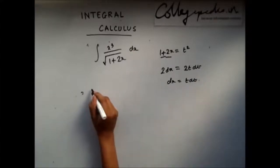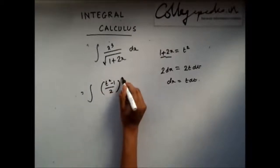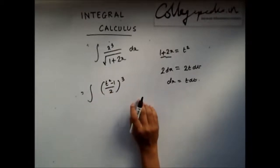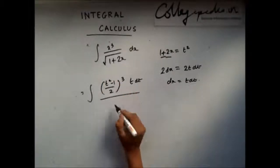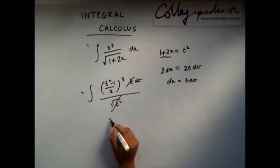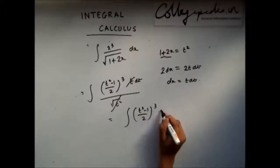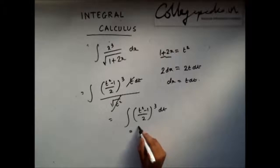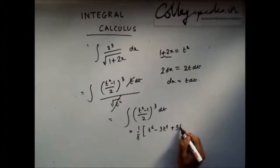This becomes root of t square minus 1 by 2 to the power 3, dx can be written as t dt, and here this becomes root of t square. This gets cancelled and now you are left with a simple integration involving a polynomial. If you expand this polynomial you will get t to the power 6 minus 3 to the power 4 plus 3t square minus 1 dt.